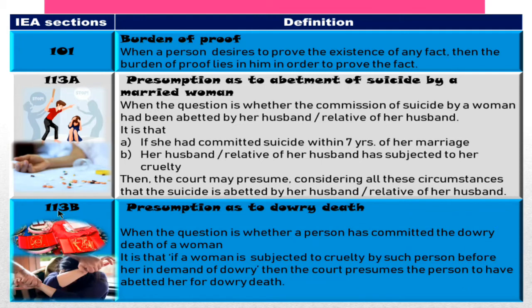Section 113B IEA deals with the presumption as to dowry death. When there is a question whether a person might have been the reason for the dowry death of a woman — if that person had subjected the woman to cruelty and demand of dowry, and death has occurred — then he is held responsible for dowry death.